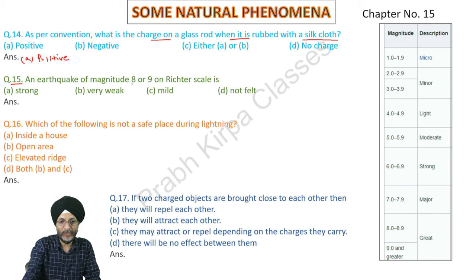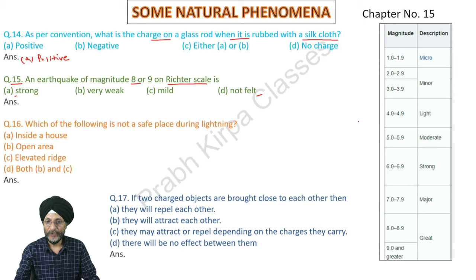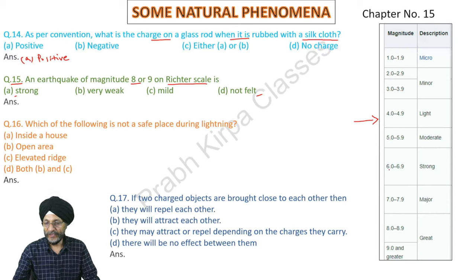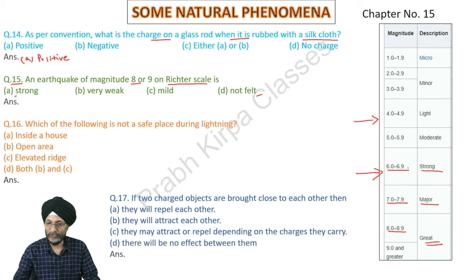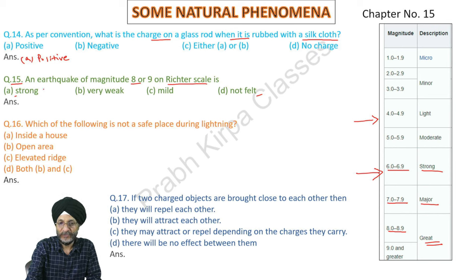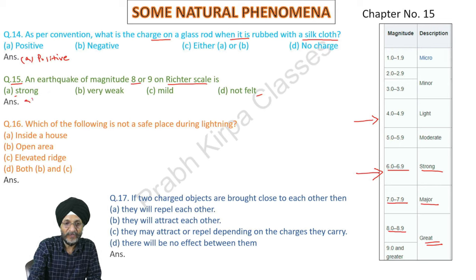Question 15 MCQ: An earthquake of magnitude 8 or 9 on the Richter scale is classified as strong, very weak, mild, or not felt? An earthquake of 6 and above is strong, 7 to 9 is major, and 8 and above is considered great. Since the option 'great' is not available, we select 'strong' as the answer.